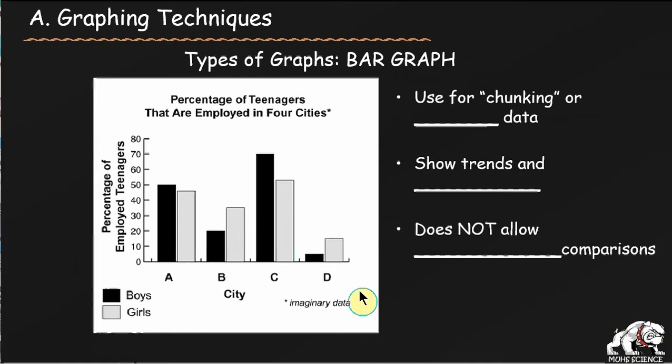Well what these bar graphs are used for is what we call chunking data. We also call it grouping that data together and you can compare sizes with these different ones. So we're comparing the size of percentage of employed students. What it doesn't allow you to do is to draw very many conclusions on this. You can't see cause and effect very easily. Why is city C the highest employed? Why is city D the least employed? Are there more businesses in city C? Was there some kind of natural disaster in city D? Maybe city D is having a high adult employment and so they're not needing to employ teenagers. There could be all kinds of reasons. It's hard to tell on the bar graphs.